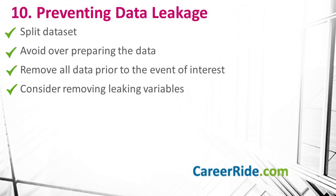Question number 10: What is data leakage and how would you prevent it? Data leakage is when the model uses data other than the training data while getting created — this usually happens when the validation or test data leaks into the training data. To prevent this: first, split your data set into train, validation, and test data, and keep everything other than your training data away, using it only when you are fully done training the model. Avoid over-preparing the data, as it may lead to overfitting. You can also remove all data prior to the event of interest, and if you suspect certain variables are leaking into the model, consider removing them altogether.